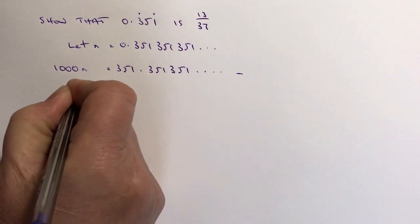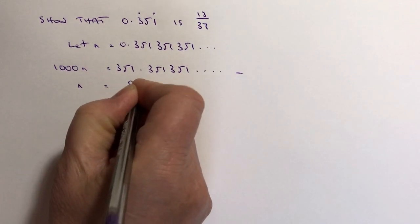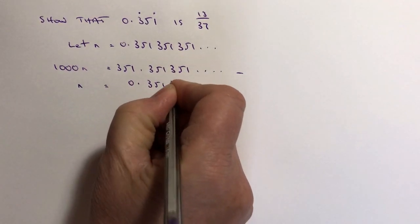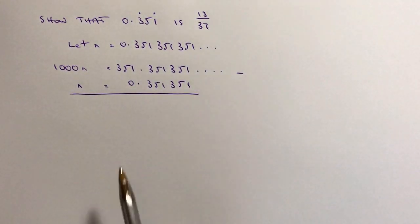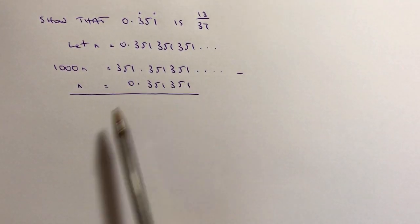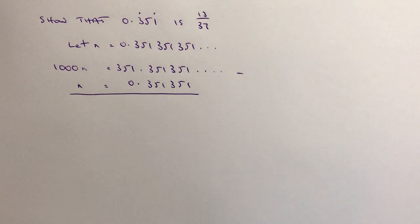And that means then if we take away this value of n, we're in a position where we can get rid of all of the recurring numbers. And that's this 351 element of it. Please do have a look at the other videos if you're not sure.